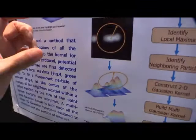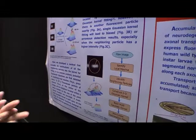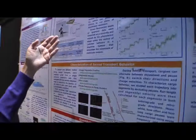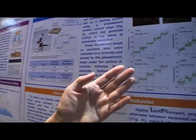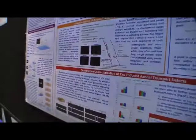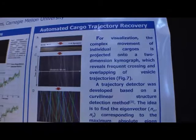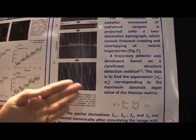By doing this, we can detect each vesicle at about 10 nanometer resolution. We also set up a validation system using a pair of stages, and validated that the software can detect individual fluorescent vesicles at 8 or 16 nanometer resolution. We then developed a technique to recover each vesicle trajectory from the kymograph, where you can clearly see cross or overlapped structures for individual vesicles.